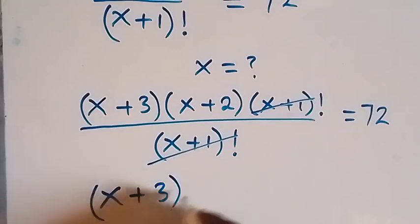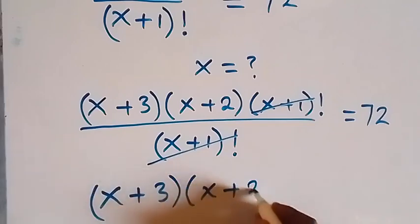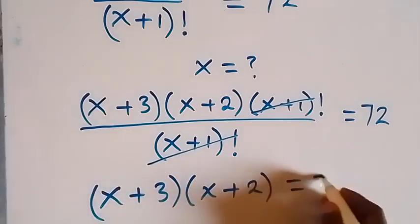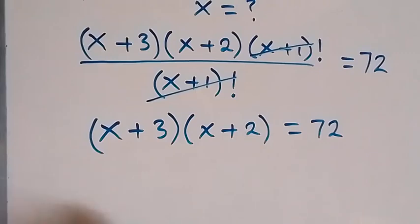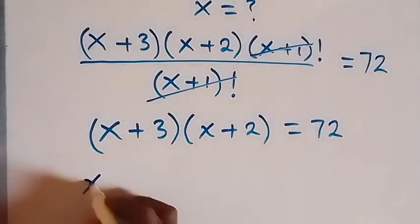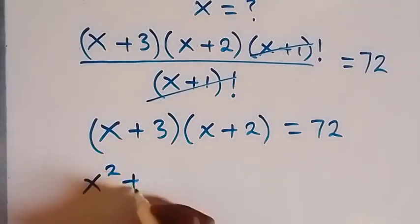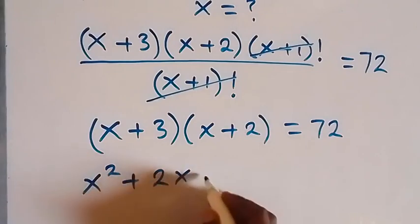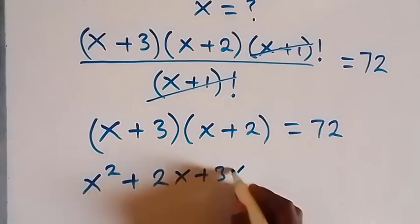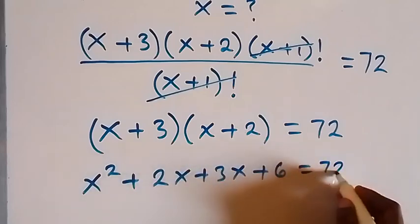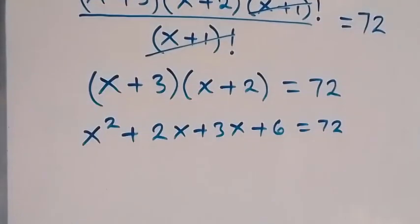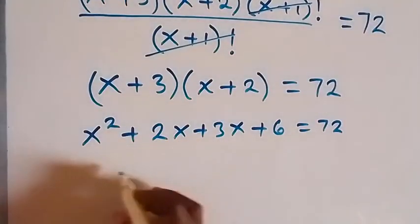times x plus two equals 72. From here we expand this bracket and we have x squared plus 2x plus 3x plus 6 equals 72. In the next step we can add these together, so this will